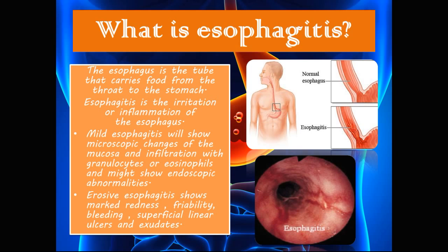Mild esophagitis will show microscopic changes of the mucosa and infiltration with granulocytes or eosinophils, and might show endoscopic abnormalities. Erosive esophagitis shows marked redness, friability, bleeding, superficial linear ulcers, and exudates.